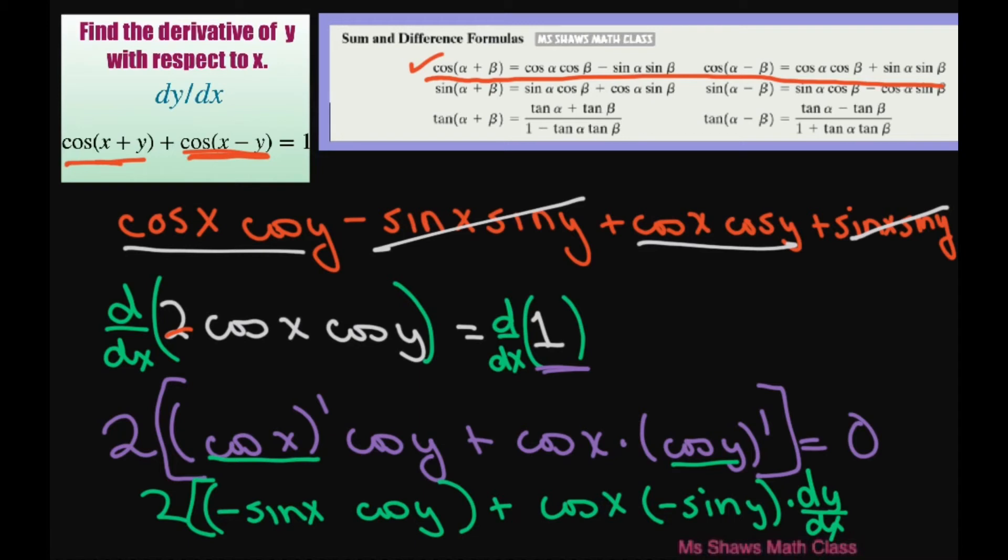Usually with this one you also write, this one is derivative of x with respect to x, but that just equals 1. So you don't need to put it, and this equals 0.